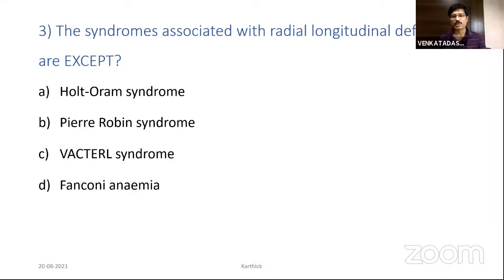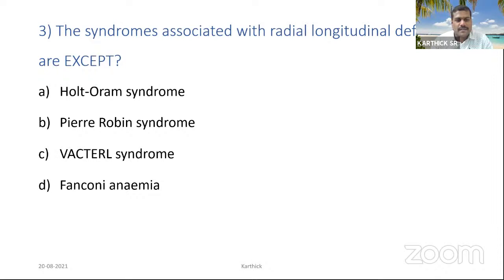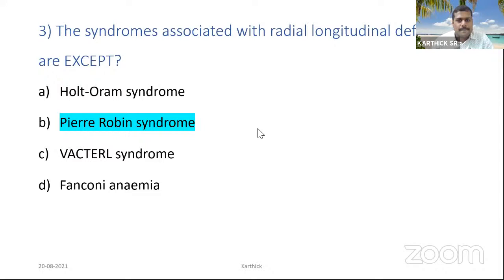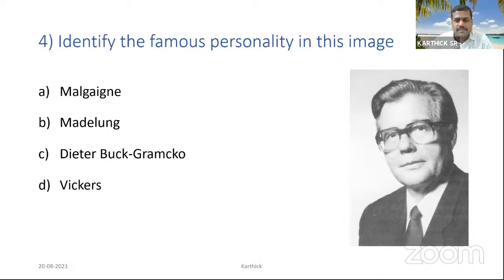The next question: syndromes associated with radial longitudinal deficiency — except which one? Options are Holt-Oram syndrome, Pierre Robin syndrome, VACTERL association, and Fanconi anemia. The right answer is Pierre Robin sequence. This question is important and related to today's presentation.